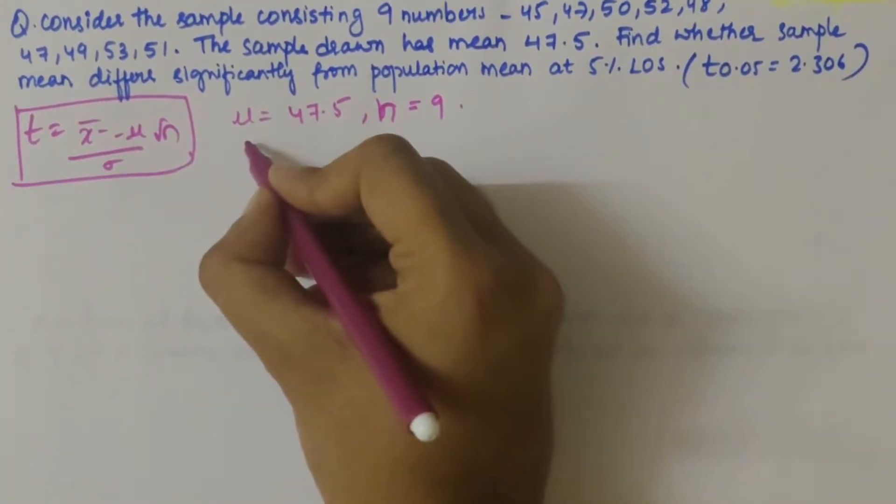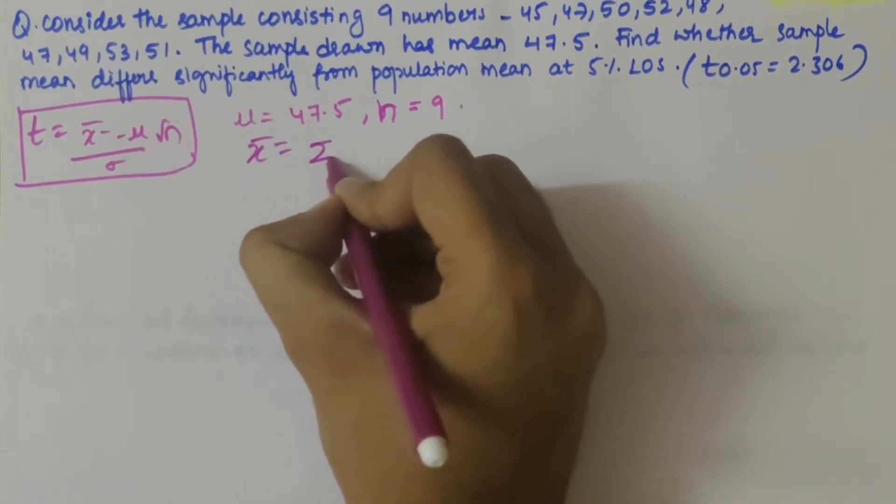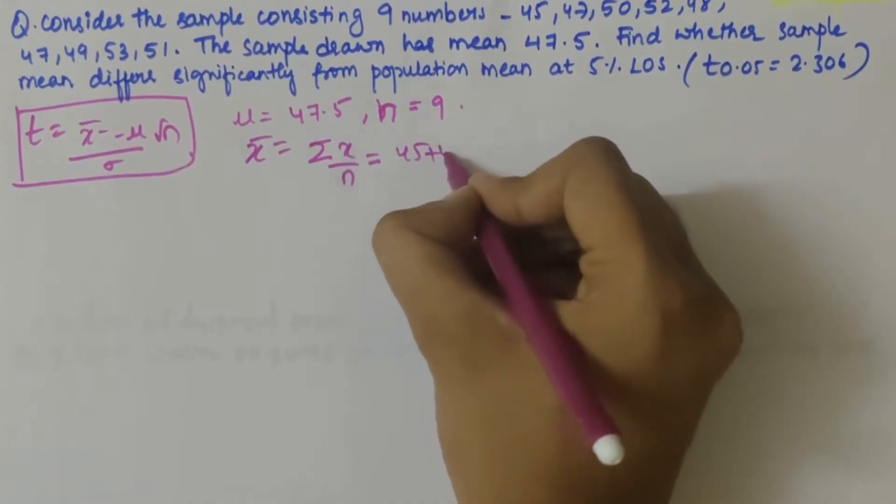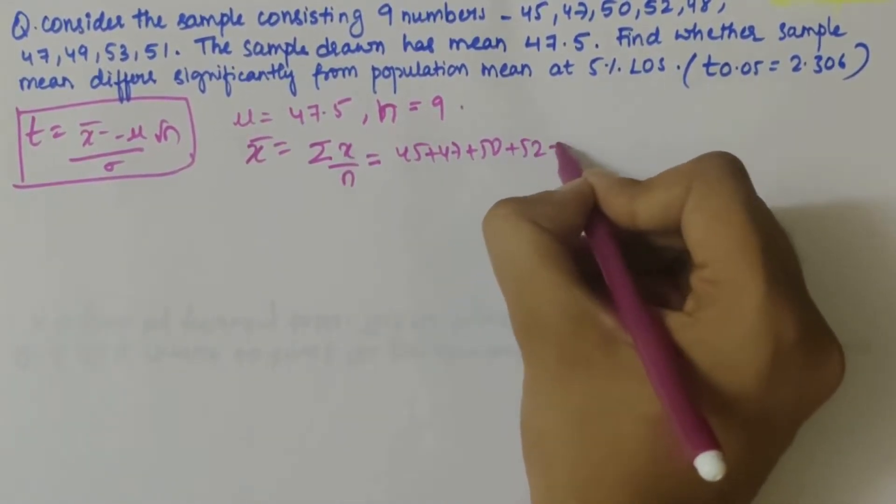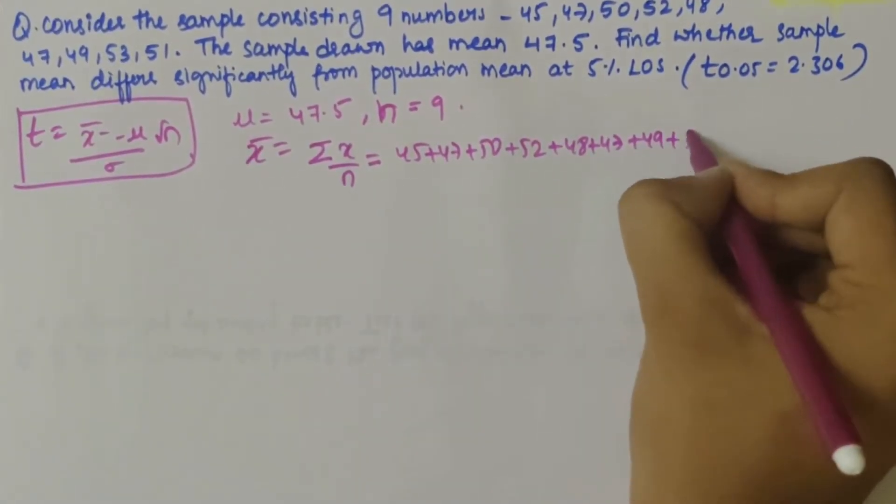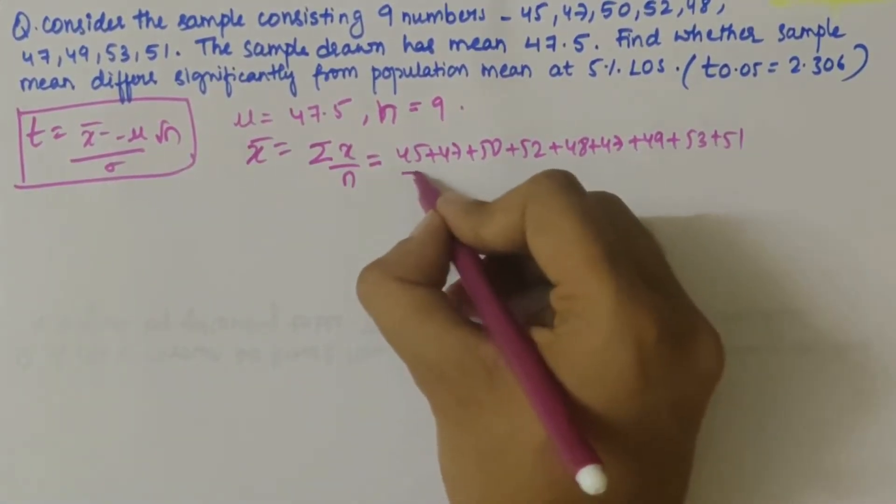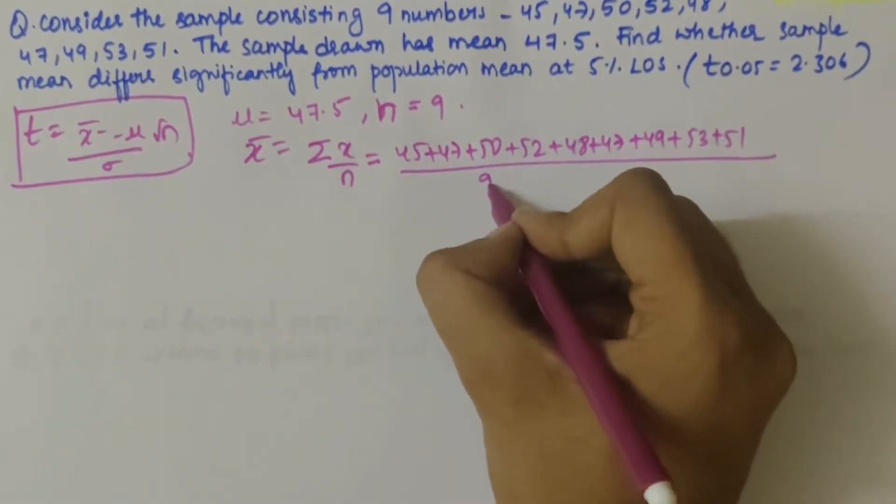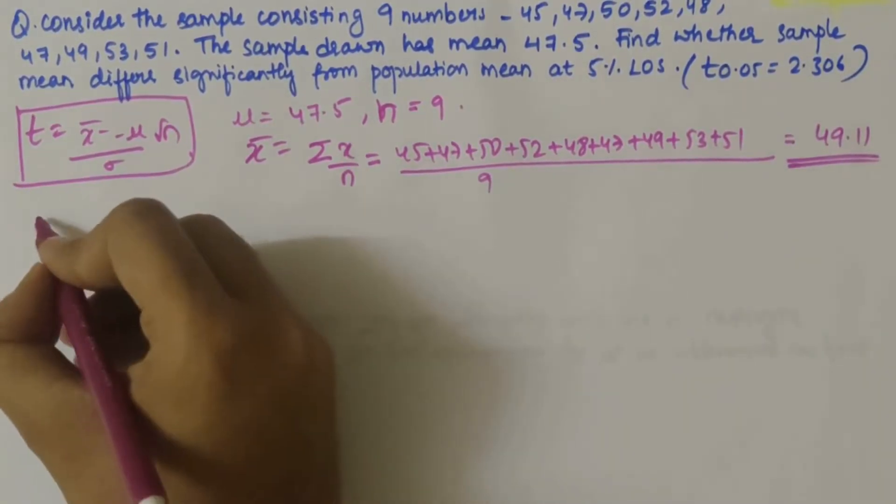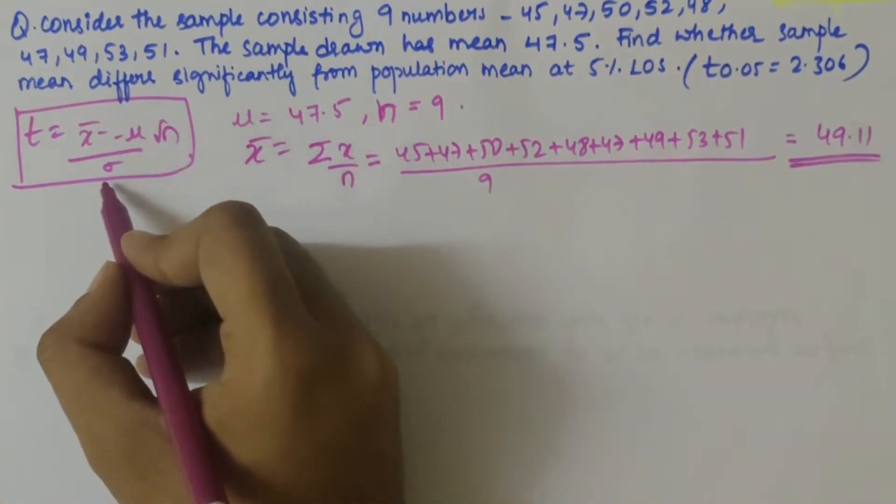Now, we have to find out the x bar value, that is summation of x by n. That is 45 plus 47 plus 50 plus 52 plus 48 plus 47 plus 49 plus 53 plus 51, divided by n value which is 9. If you solve this, you will get 49.11.